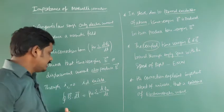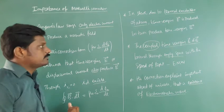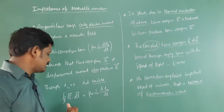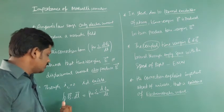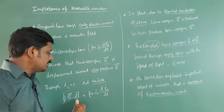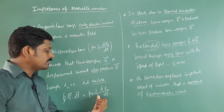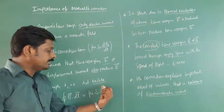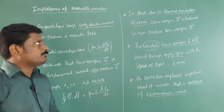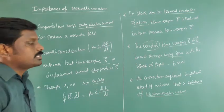We can rewrite this as Ampere-Maxwell's law: the closed integral of B dot dl is equal to mu-0 epsilon-0 times d-phi by dt.